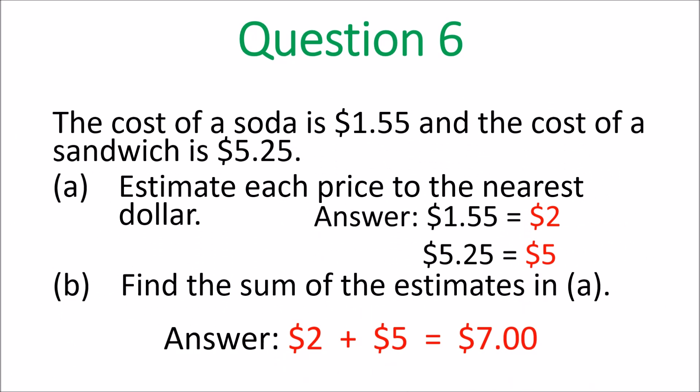Question six: the cost of a soda is $1.55, so to the nearest dollar that's $2, because $0.55 is closer to $2. And $5.25 is $5, as it's closer to $5. Find the sum of the estimates: $2 plus $5 is $7. Sum means you add.